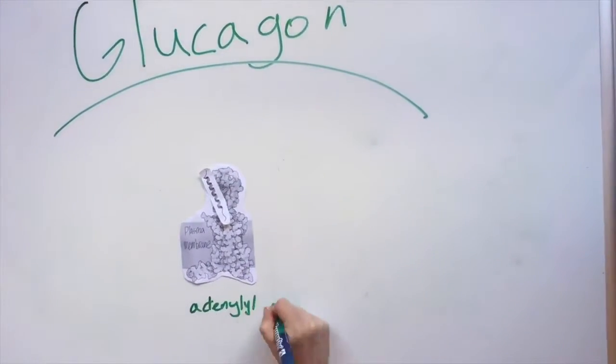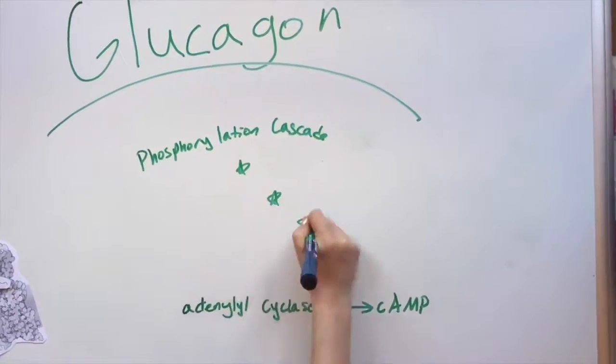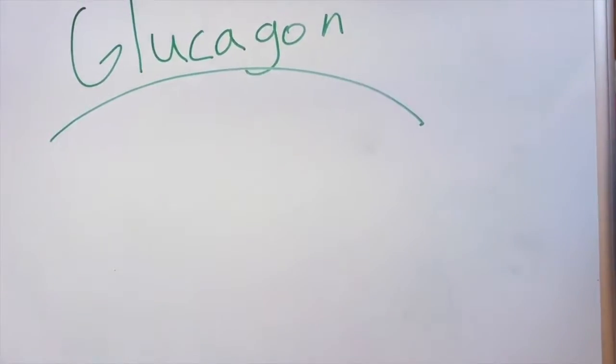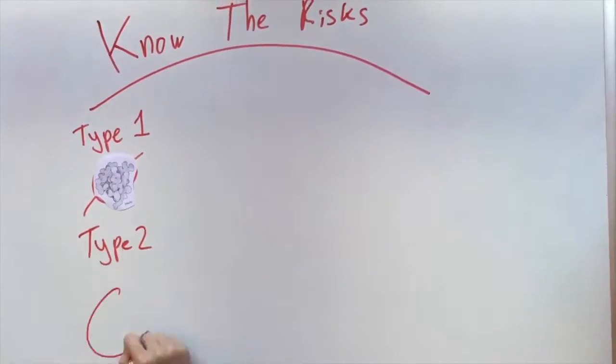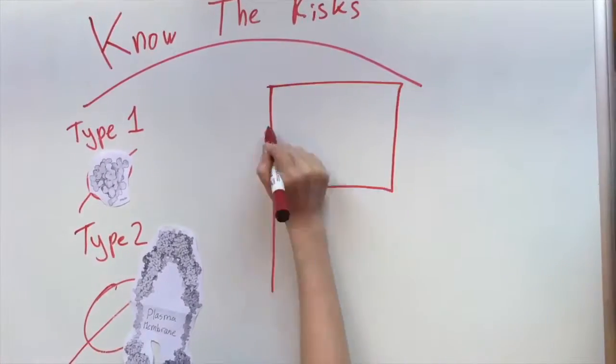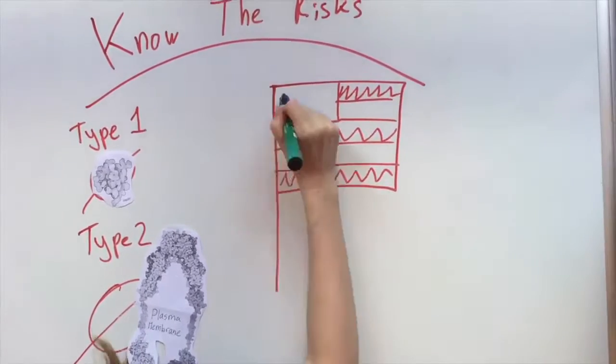This activates the signaling pathway consisting of adenylyl cyclase and cyclic AMP and the protein kinase phosphorylation chain. Insulin deficiency or a failure to activate the insulin signaling pathway lead to serious problems that affect nearly 29 million people in the U.S.